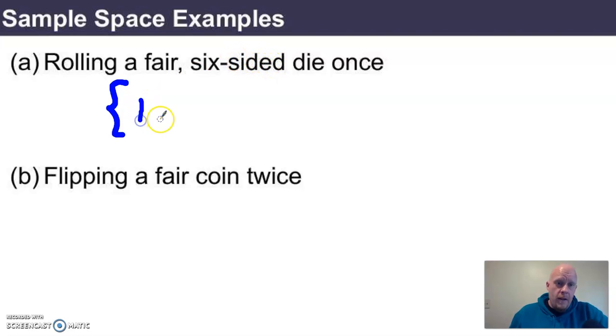Well, you could get a 1, or you could get a 2, or a 3, or a 4, or a 5, or a 6. That set there is the entire set of possible outcomes.